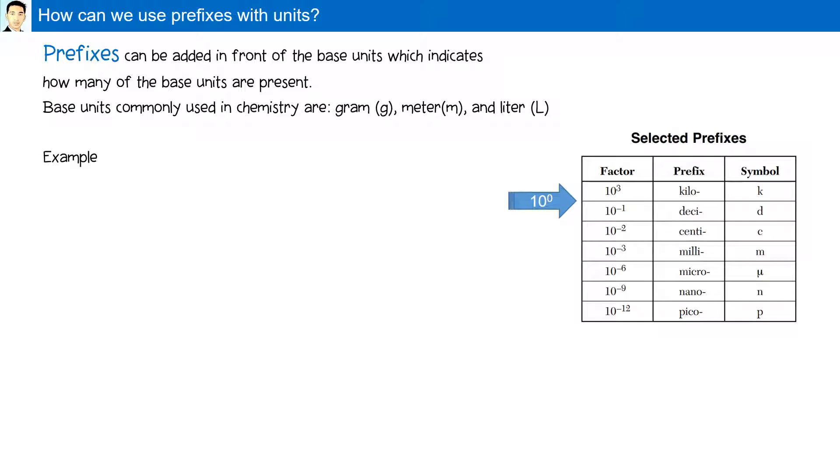For example, kilo. One kilo unit is equal 10 to the third base units. For example, if you were to have 2 kilograms, that would be 2 times 10 to the third grams, which is 2000 grams.